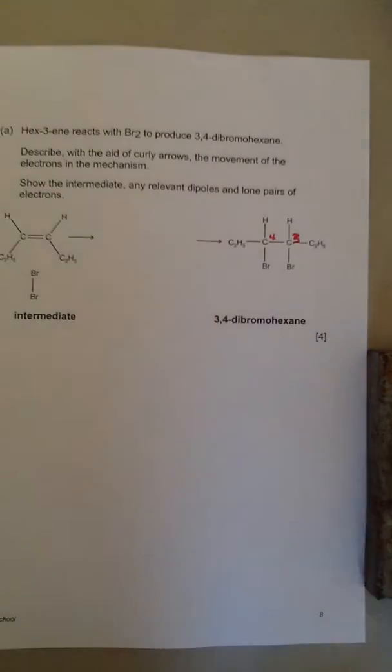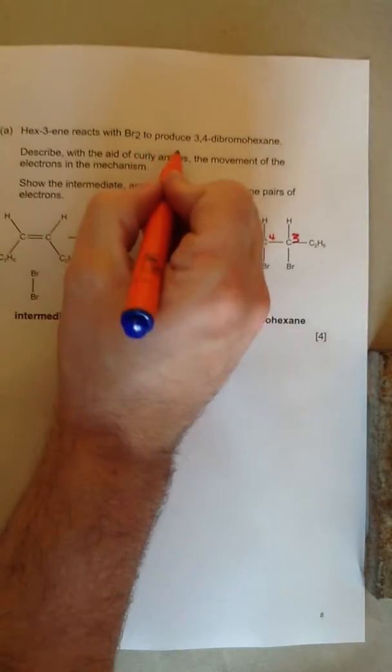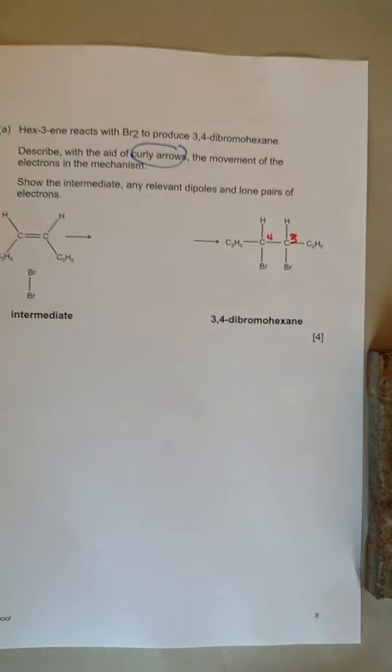It says describe with the aid of curly arrows, so the important bit is curly arrows, the movement of electrons in the mechanism. So it tells you curly arrows show you where electrons go.